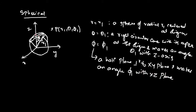All three surfaces intersect at a point, and that point is P(r1, θ1, φ1). To summarize: a point in any of these three coordinate systems — Cartesian, cylindrical, or spherical — is a result of the intersection of three orthogonal surfaces. For Cartesian, the three orthogonal surfaces are three planes. For cylindrical and spherical coordinate systems, there are two surfaces and one plane.